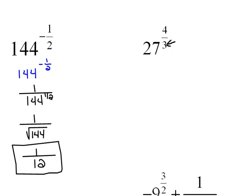Remember, the denominator is the index, so this would be the third root of 27, and then the top number is the power.